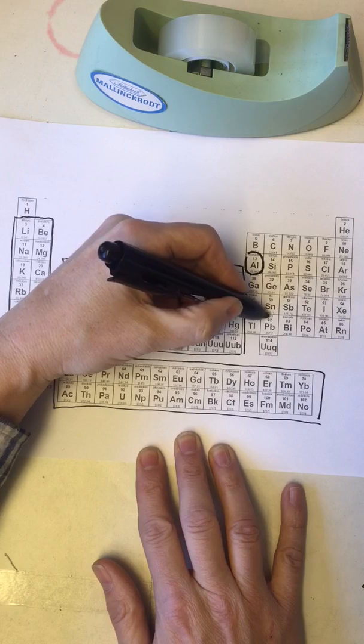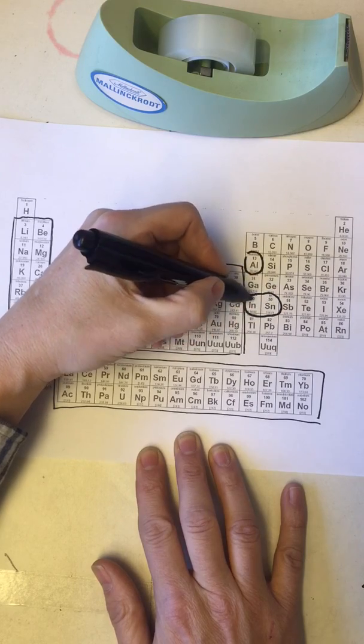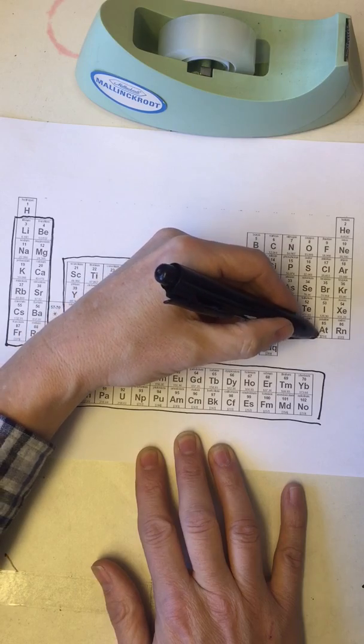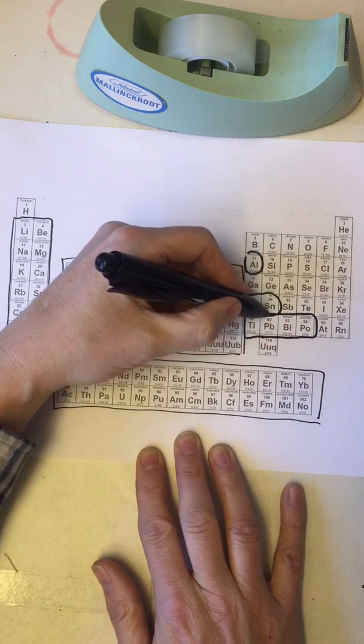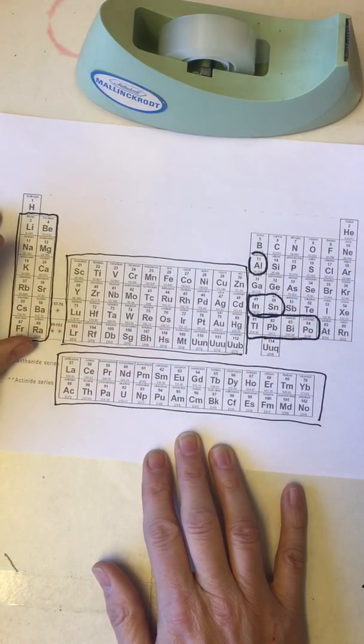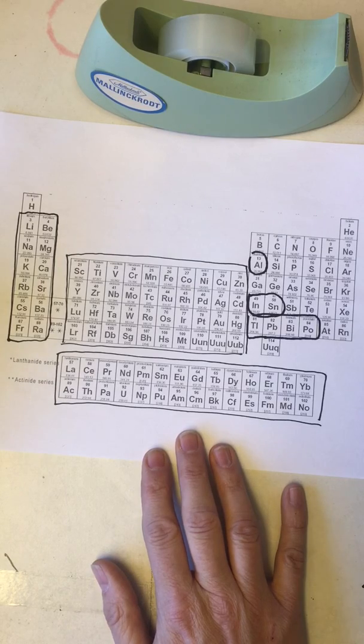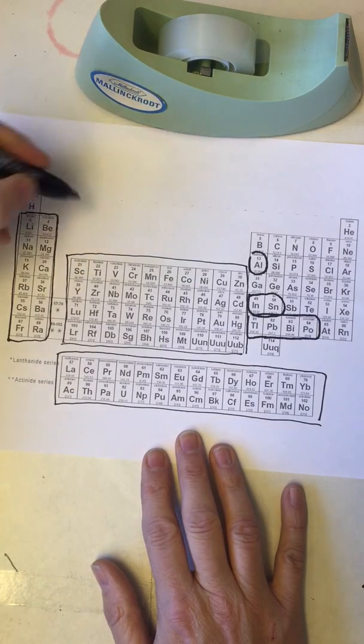Thallium, lead, bismuth, and polonium. So these are the metals in the periodic table. Again, these ones tend to conduct electrically and thermally very well and they can be made into wires, they're ductile, and you can pound on them without having them break so that makes them malleable.